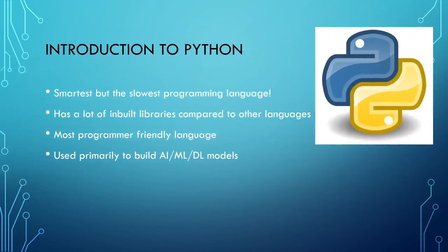Let us introduce Python. It is the smartest and most user-friendly programming language, with a lot of inbuilt libraries compared to other languages. It is primarily used to build AI, ML, and DL models. However, it is the slowest programming language — at least 40 to 50 times slower than C or C++. For example, 50 lines of Python code will execute 40 to 50 times slower than the equivalent C/C++ code. This is its only disadvantage.